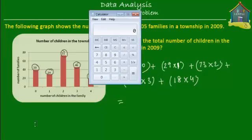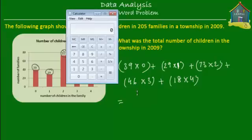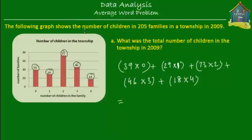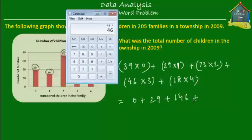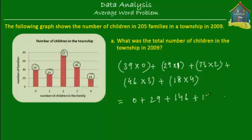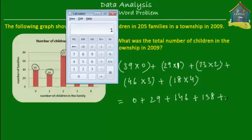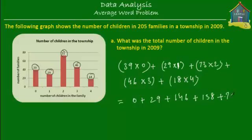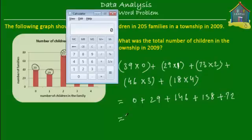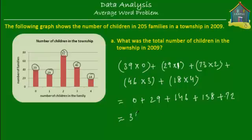Let's use a calculator to save time. So this is 39 times zero, which is zero, plus 29 times one, which is 29, plus 73 times two, which is 146, plus 46 times three, which is 138, plus 18 times four, which is 72. Adding them all up: 29 plus 146 plus 138 plus 72 equals 385.